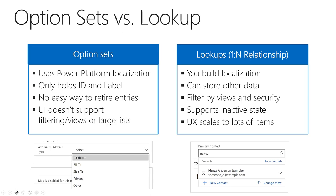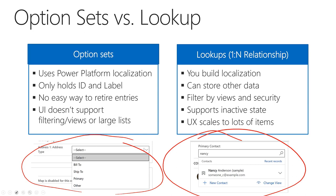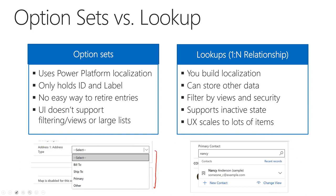A lot of people look at a one-to-many relationship and think they look a lot like option sets, but there are a few important differences to be aware of between option sets and one-to-many lookups. Option sets always show the same list of options — you can't filter them, you can't use views, you'll always see the same list when they're used. And when you need to remove an option that needs to be retired from your application, it's not straightforward. However, one advantage of option sets is if you need to localize the option set labels — you can do that with the existing localization structure as part of Power Platform within the Common Data Service.